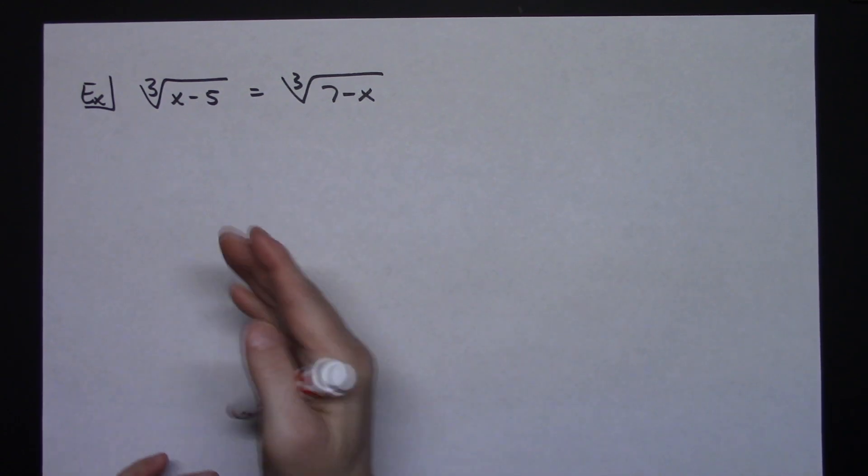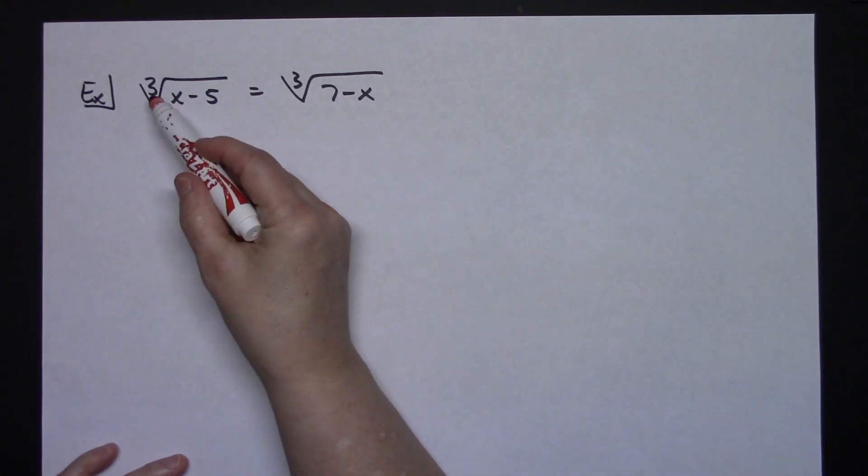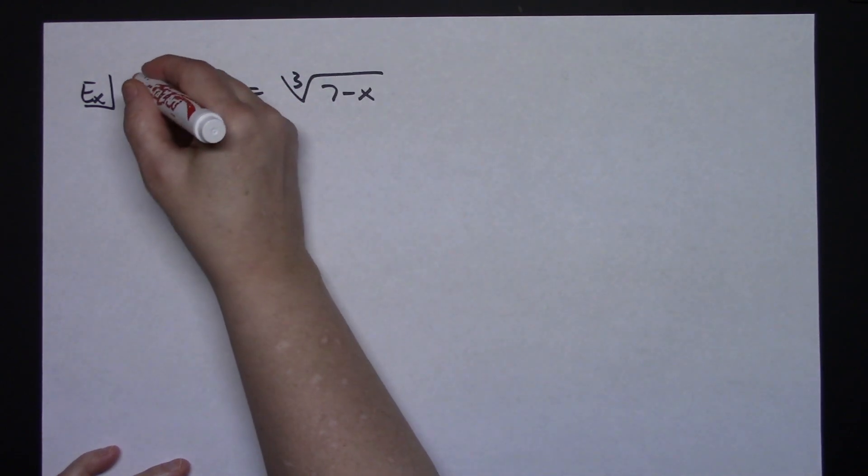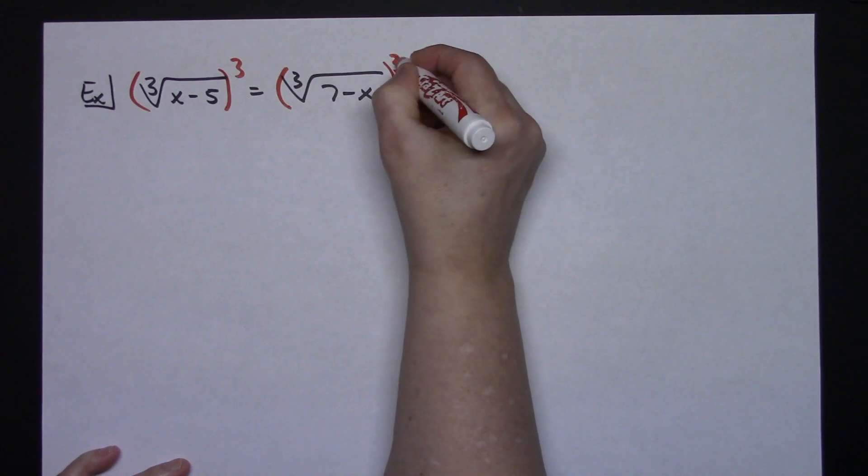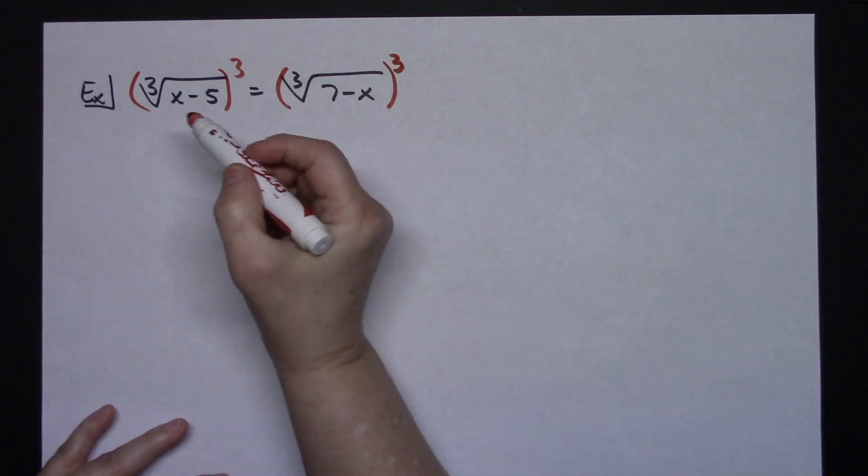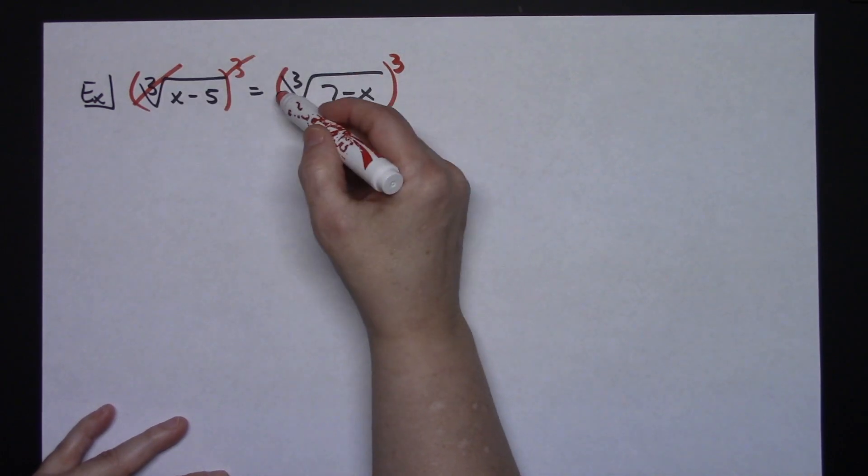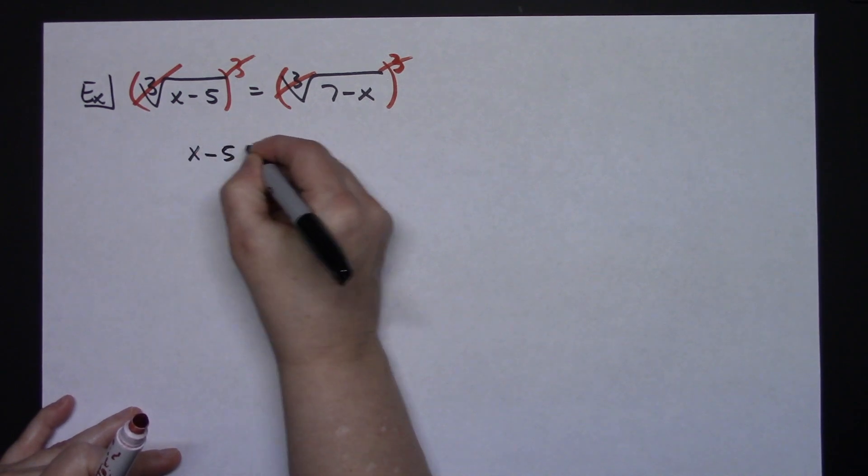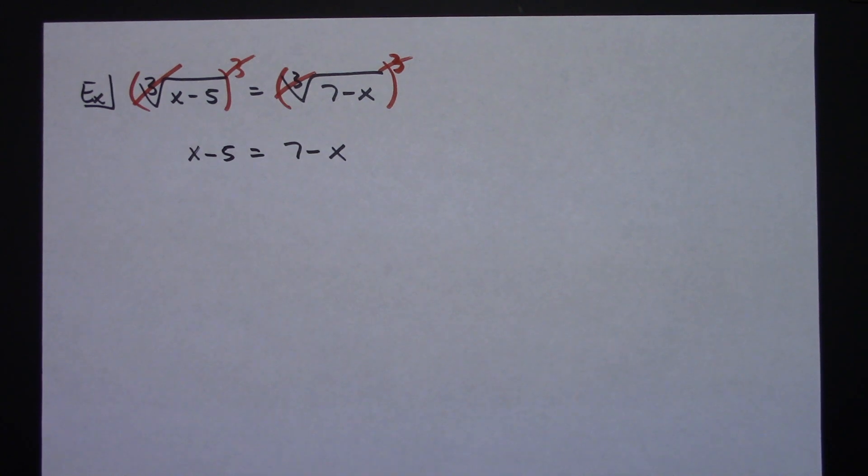...the inverse operation to get rid of that cube root. So for cube root, the inverse operation would be cubing each side of the equation—just like the square root and squaring, this is cube root and cubing. Basically what that does is the cube root and the cube cancel each other out, which is going to leave me with x minus 5 equals 7 minus x. So right away those cube roots fell out, which now makes the equation pretty...